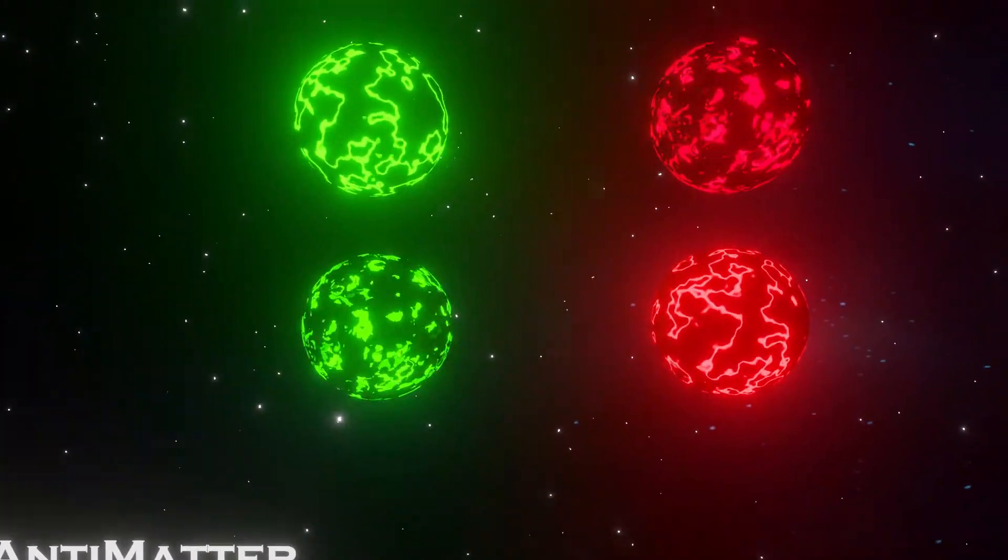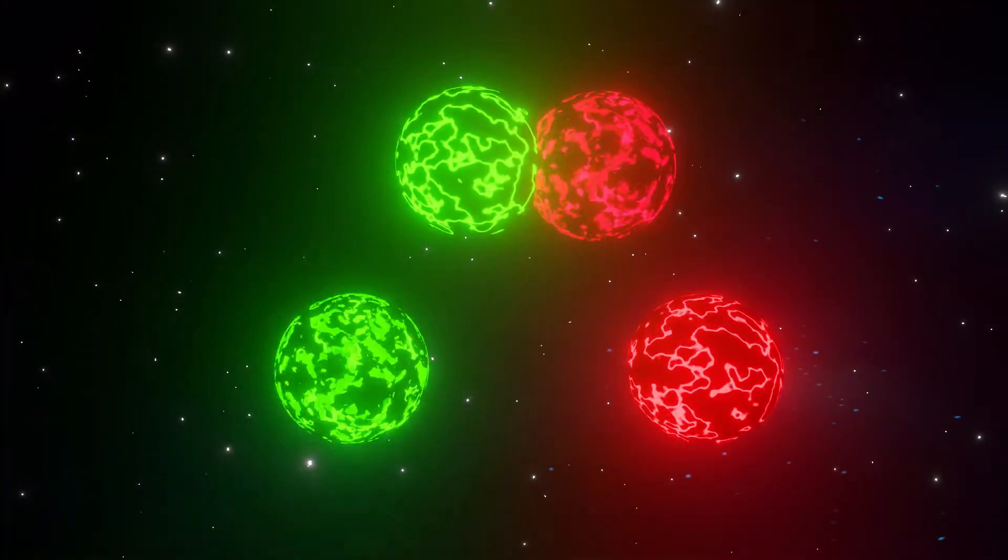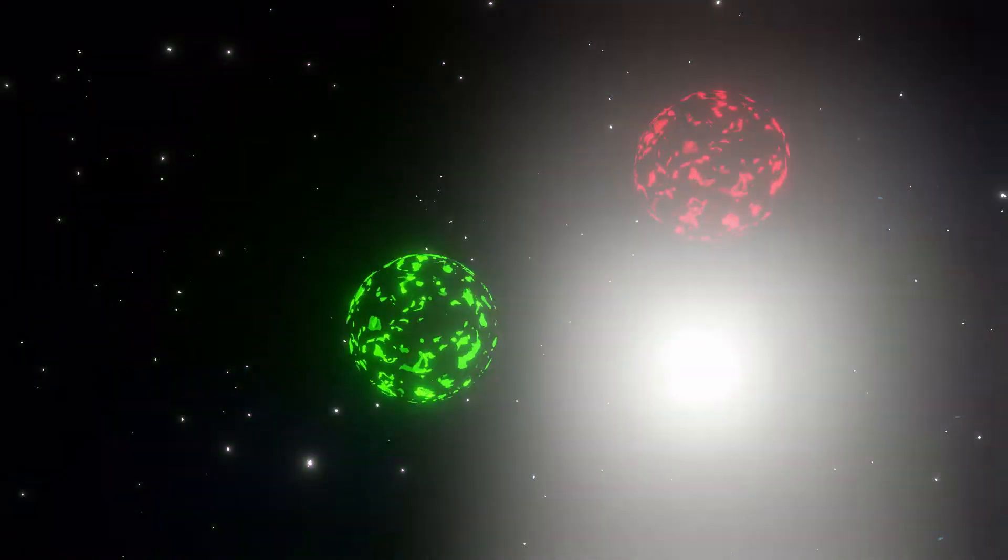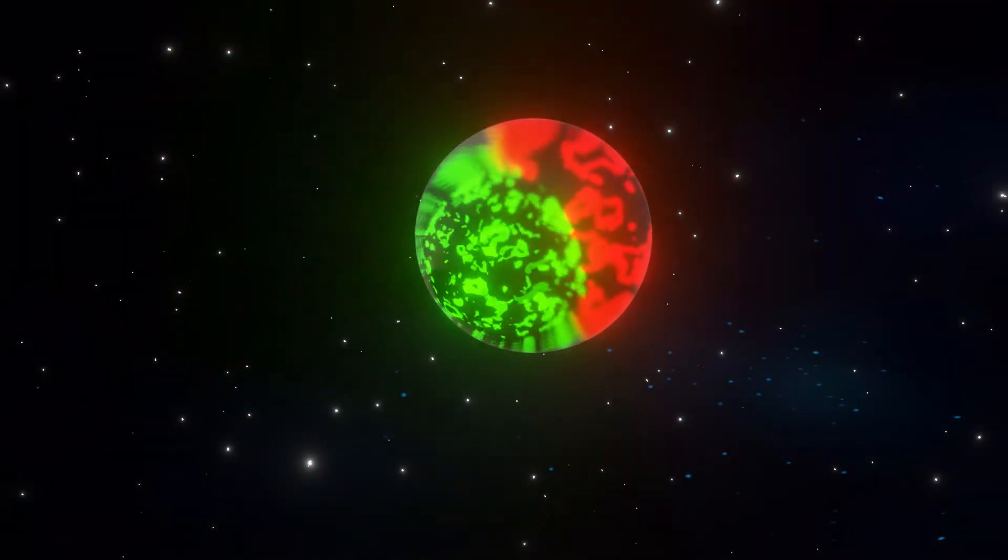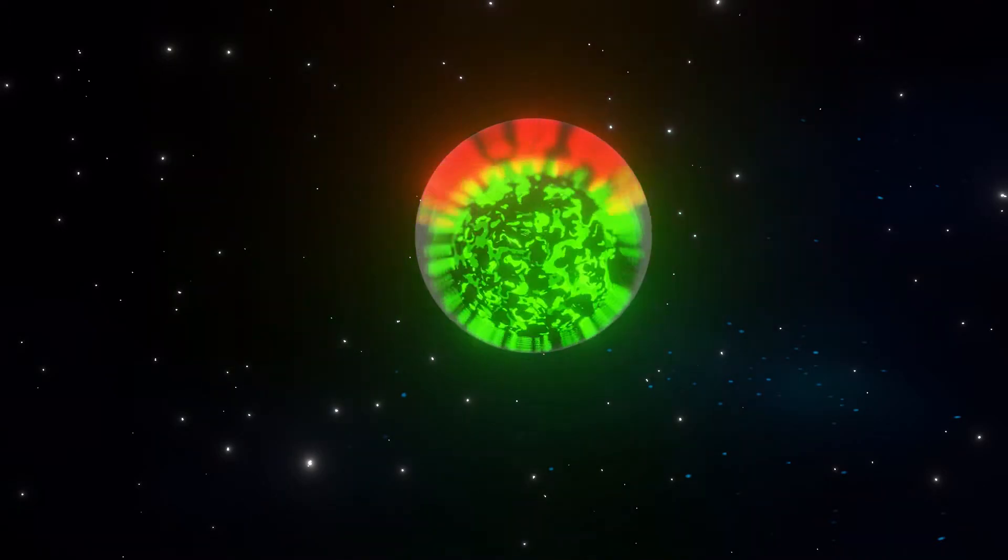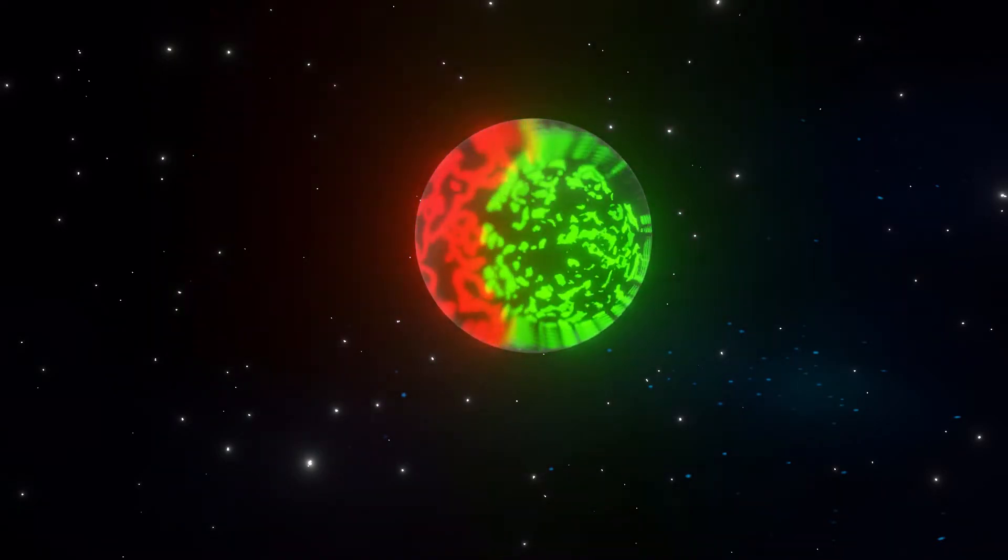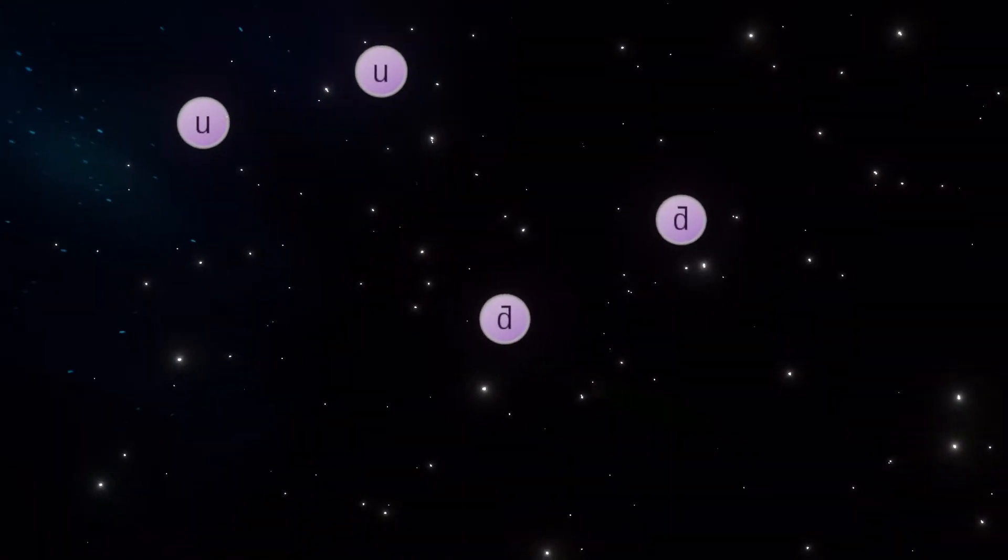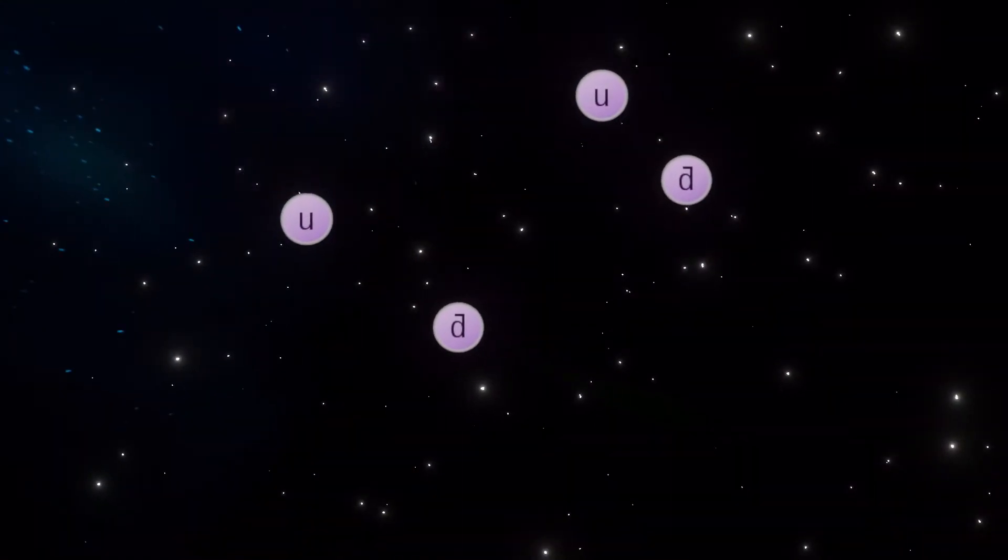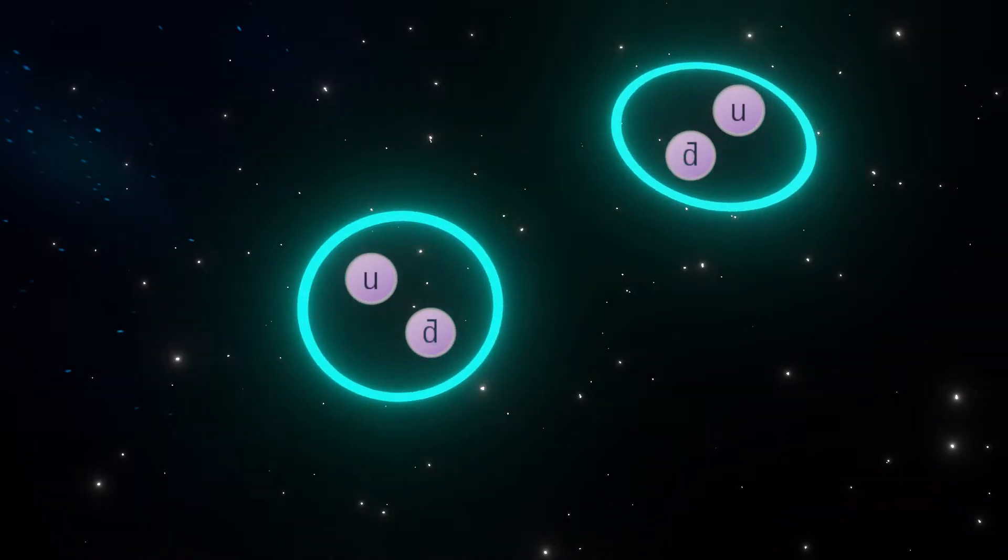Antimatter particles annihilate with only their own matter counterparts. This means that there can be other particles formed by the combination of one matter particle and an antimatter particle, as long as they are different base particles. For example, mesons are formed when equal number of quarks bind with anti-quarks through strong nuclear interactions.